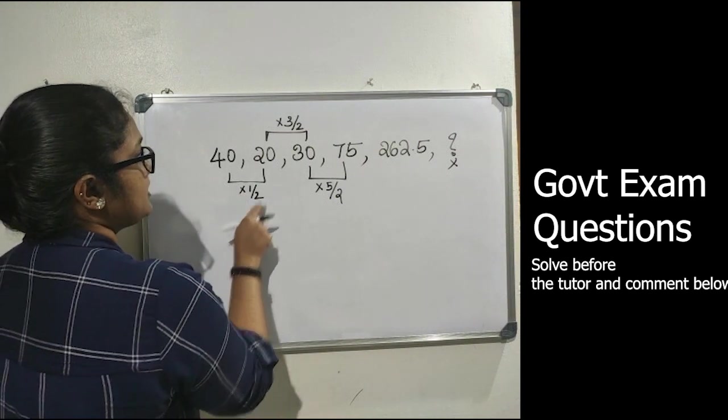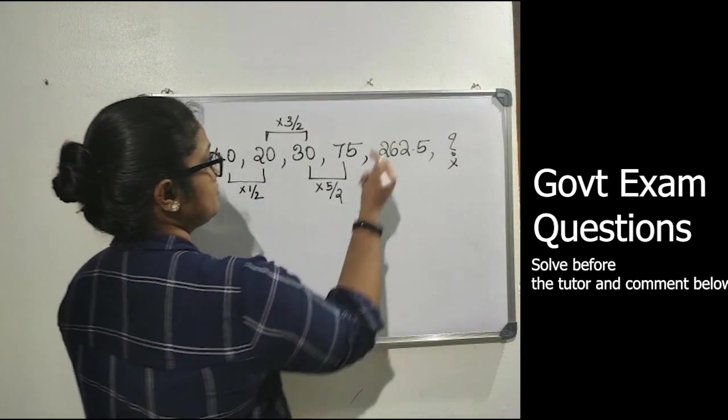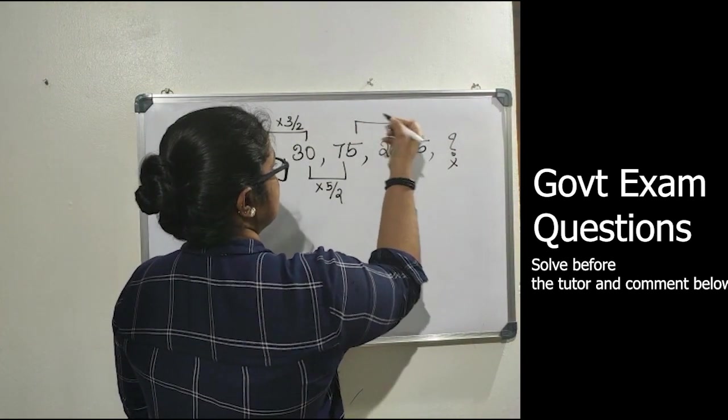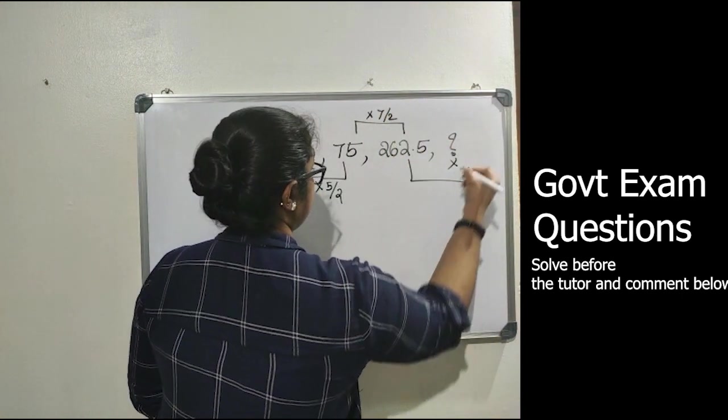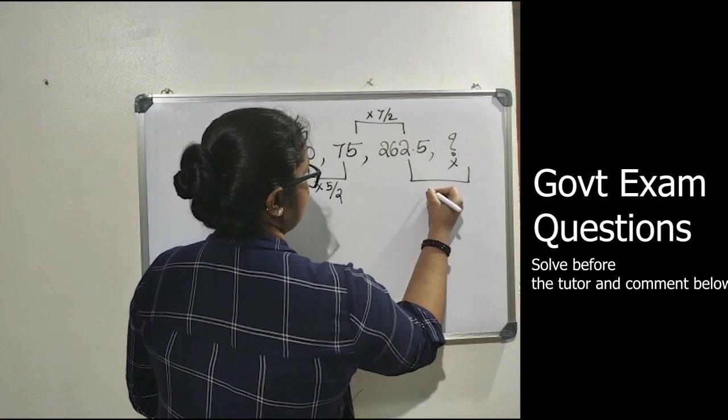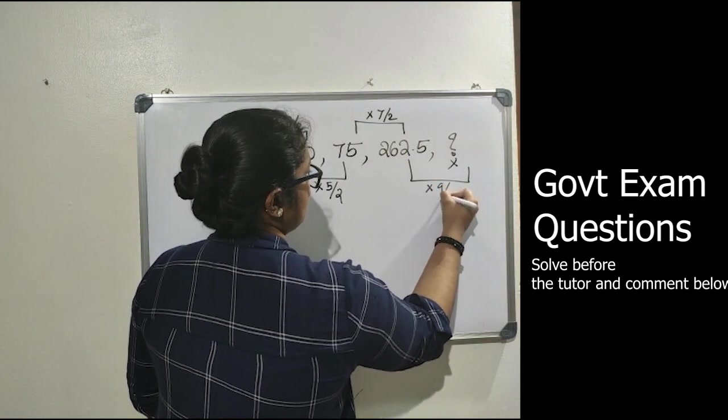Now you can see that 1 by 2, 3 by 2, 5 by 2, and this is 75 into 7 by 2. So the next number will be 262.5 into 9 by 2.